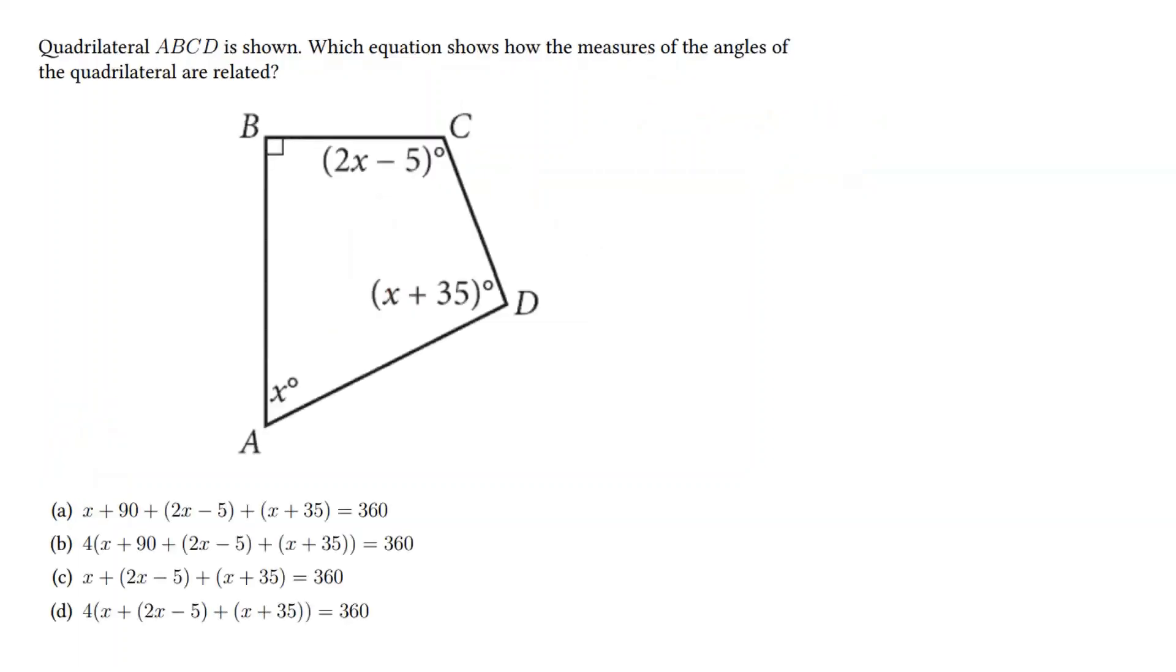Here, the internal angles of a quadrilateral are 360 degrees instead of 180 degrees. We're given different angle measures. And again, observe that this is a 90 degree angle symbol. We should have x plus the 90 degrees plus 2x minus 5 plus x plus 35. All of these internal angle measures should add up to 360.